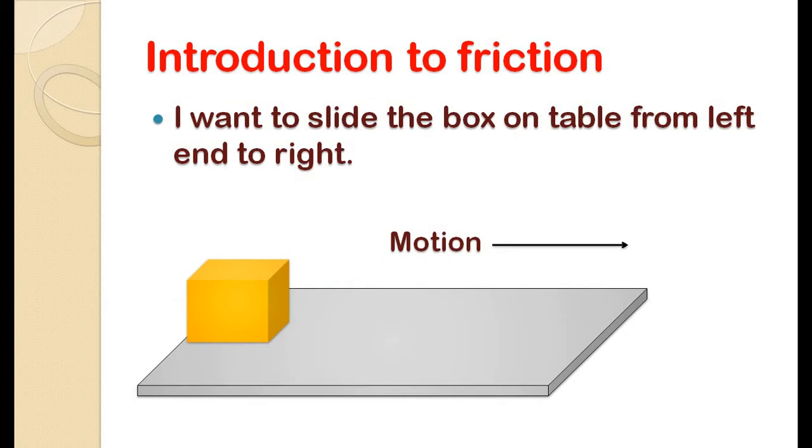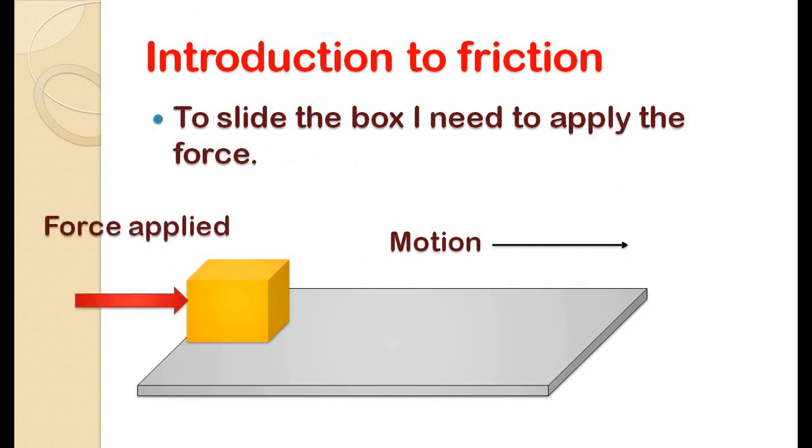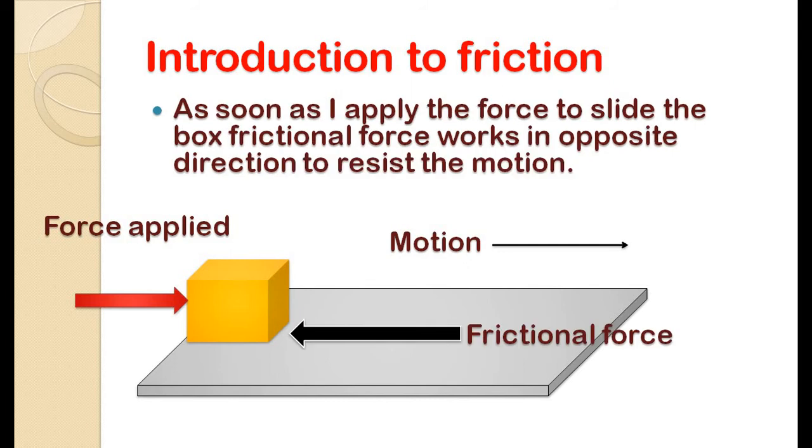As you can see, I want to slide this yellow wooden box over the table surface from left end to right. Now to slide the box, I need to apply some force. So as soon as I apply the force to slide the box, frictional force works in opposite direction of the force applied and resists the motion of the box.